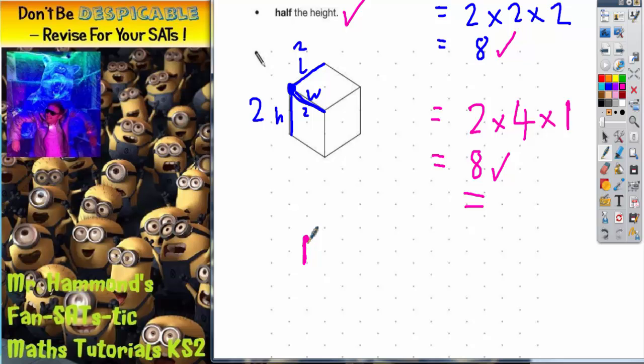Then we want 2 by 4. So we can go 1, 2, 3, 4 that way, and 1, 2 that way. So we've got 1, 2, and 4.